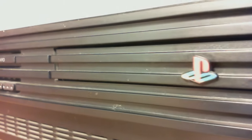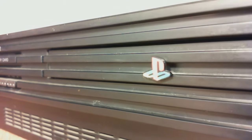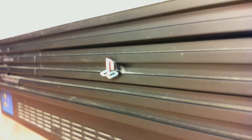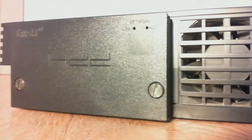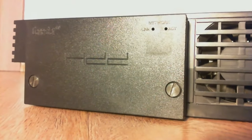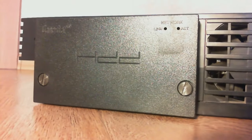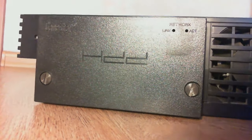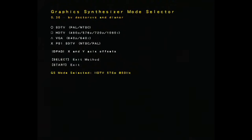But if you have a fat version of the console, you can install a hard drive and open homebrew applications from it without any intervention in the console and without installing software on the memory card. It's very convenient.